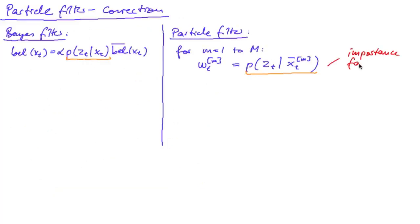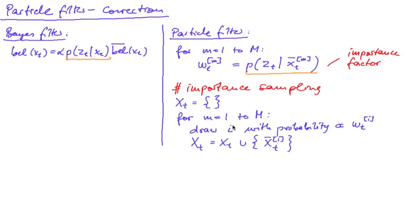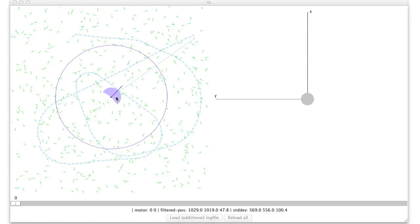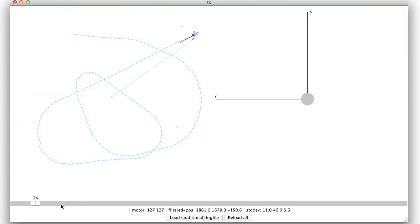We will then have a look at the correction step which involves the computation of an importance factor or weight and importance sampling of particles based on this weight. Having implemented all this we see that the particle filter is able to recover the trajectory of the robot even if it does not know the initial state.